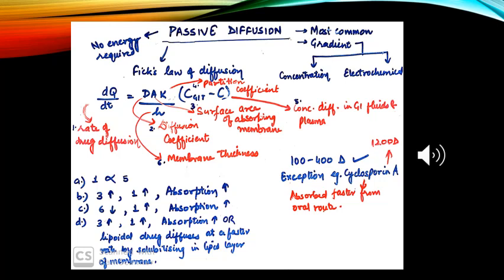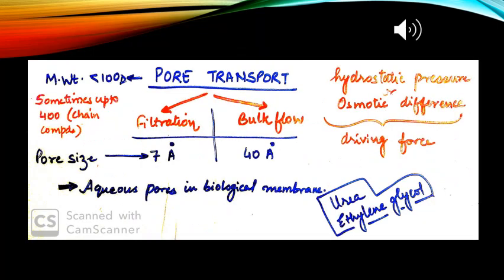This is generally seen for drugs with molecular weight 100 to 400 Daltons. A unique example is cyclosporine A — its molecular weight is 1200 Daltons, yet it is still absorbed effectively from the oral route.